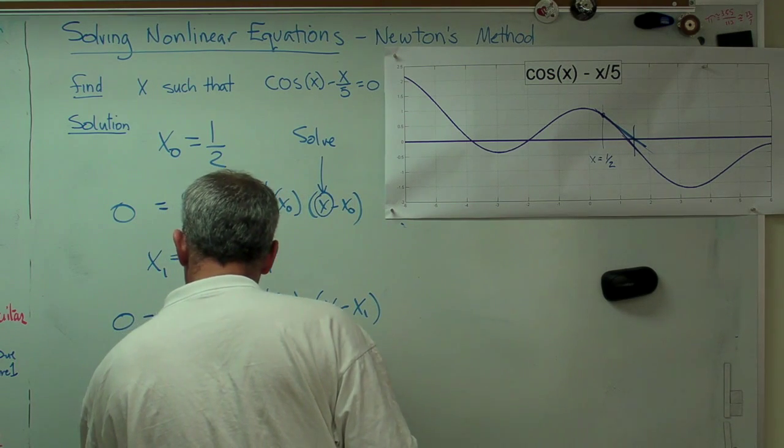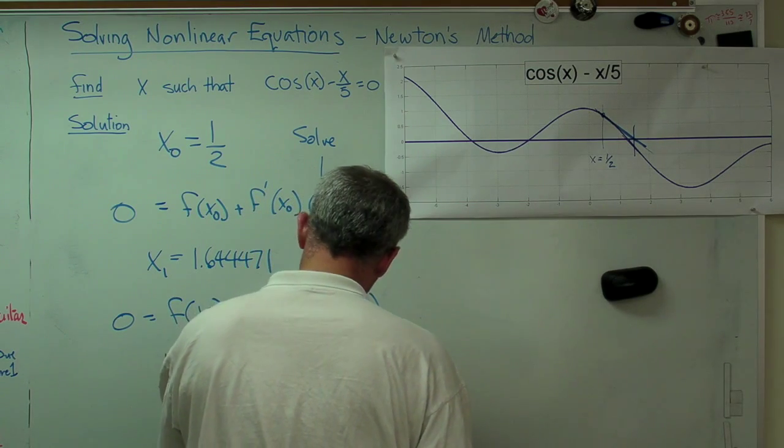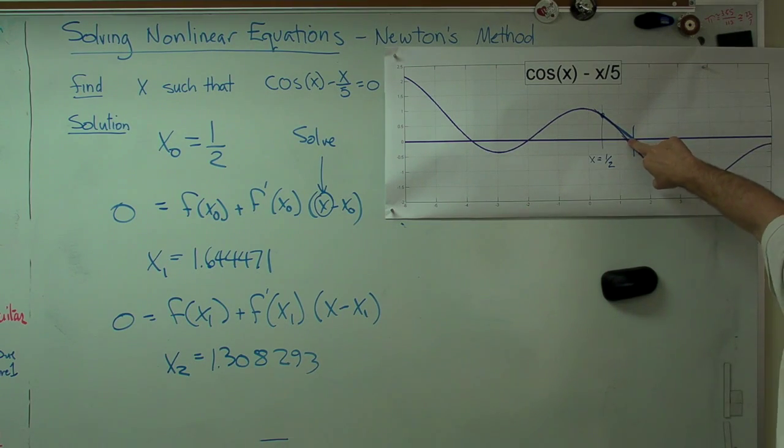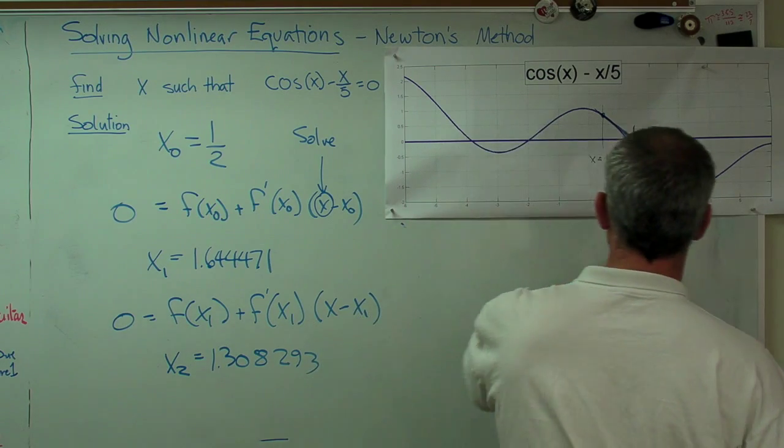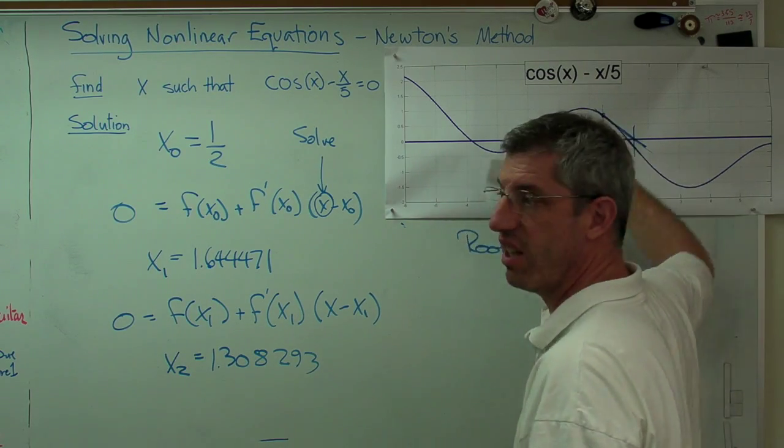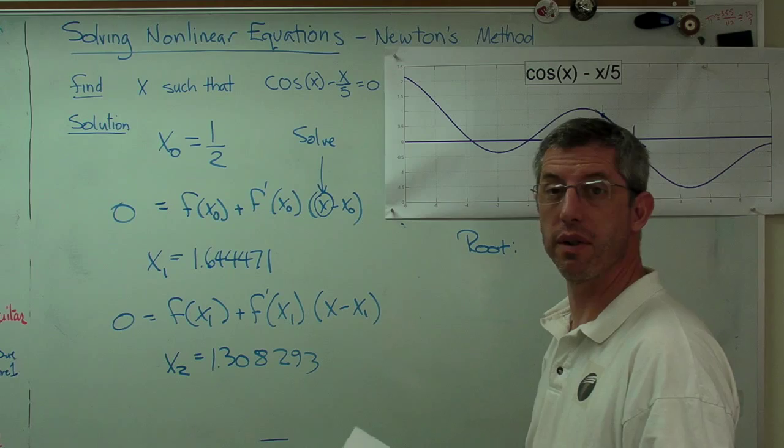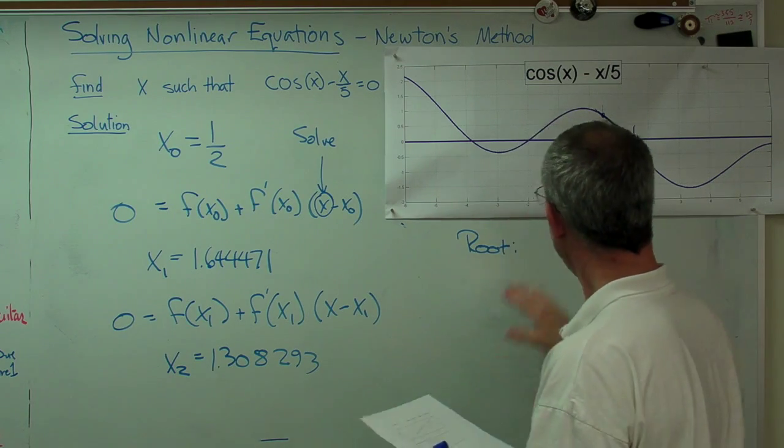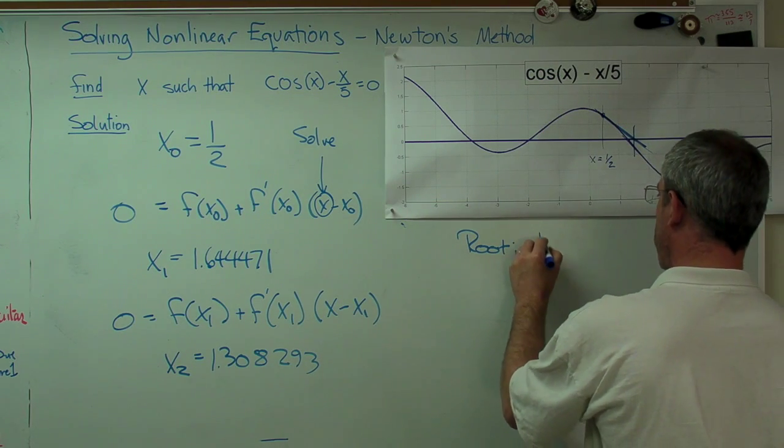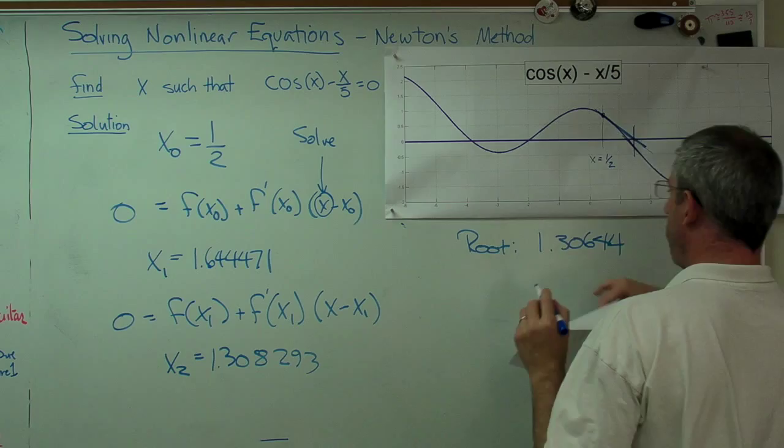Okay so x2, my next answer, is 1.308293. All right now you can look there and you can say well that's about 1.3, that must be getting pretty close. I went ahead and calculated the root using Mathcad. Mathcad actually did something like this inside. I used a program, you can do this on your calculator as well if you have a TI calculator or HP or Sharp or something. It'll find roots for you. Go ahead and have the calculator tell you what we'll consider to be the exact answer. Let's see, 1.30644, that's the exact answer.